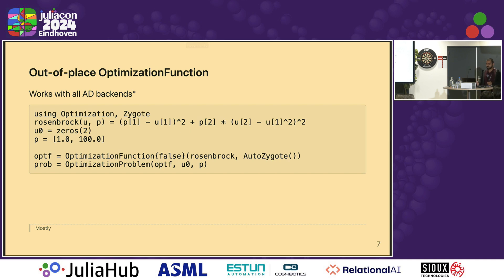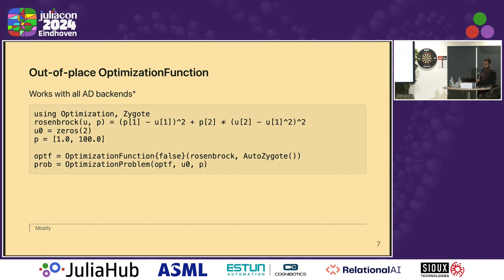I'll start off with something you might not care too much about — it's kind of internal. Basically, we now have out-of-place optimization functions supported. What does this do? It helps you avoid a lot of scalar indexing and similar issues, so you can actually start thinking about writing out oracles for GPUs. Anyone who has worked with GPUs and AD tools will know that it doesn't always work.